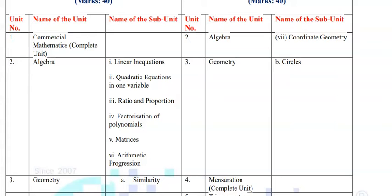To recap Semester 1: in Commercial Mathematics you study the complete unit; in Algebra, those listed chapters; and in Geometry, only similarity.